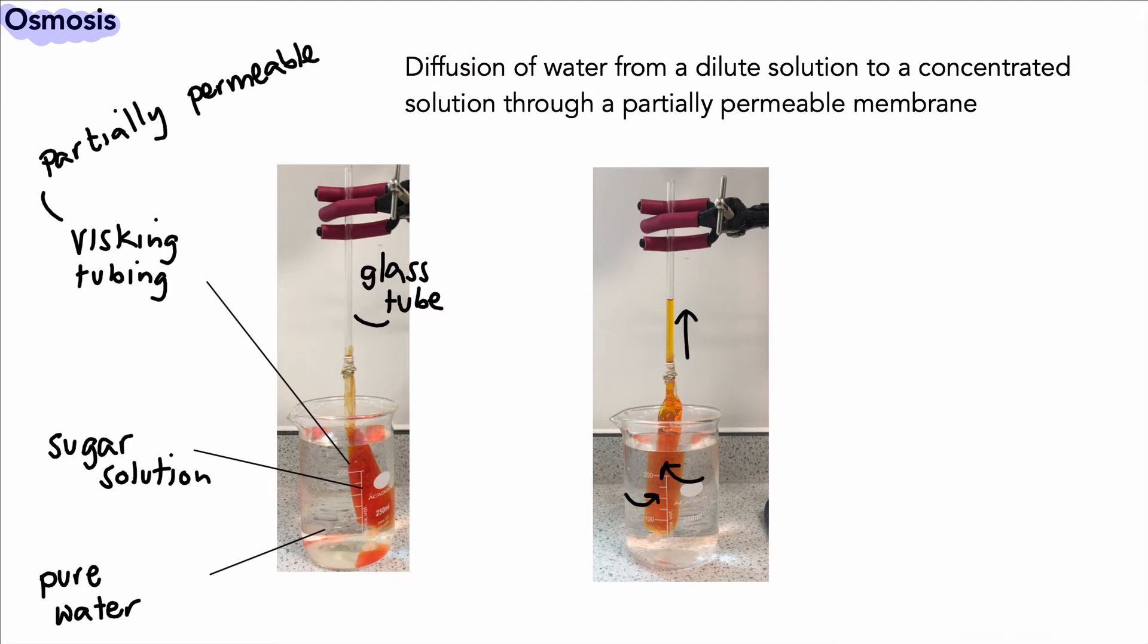So why has this happened? This is because of the idea of osmosis. This is the definition of osmosis: it's the diffusion of water from a dilute solution - and by dilute we mean a solution that has lots of water in it, you could say a watery solution, more water per given volume than a concentrated solution. A concentrated solution will have more solute dissolved in it. And this all happens through a partially permeable membrane.